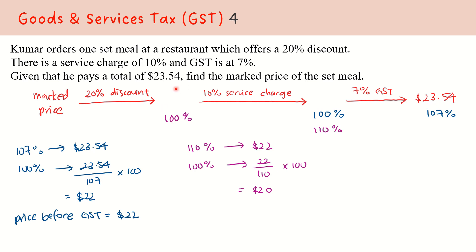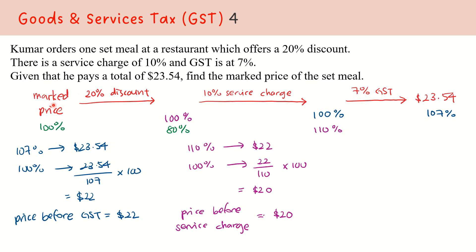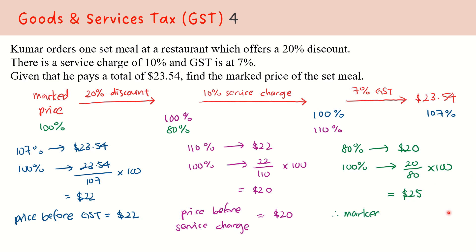So the price before service charge is $20.00. Now we proceed to find the marked price. From the marked price to this $20.00, this $20.00 is after a 20% discount, which means this amount is 80% and the marked price is 100%. So 80% represents $20.00, and 100% will be 20 over 80 times 100, therefore the marked price is $25.00.